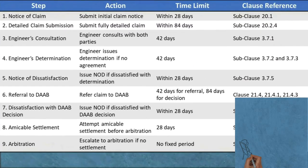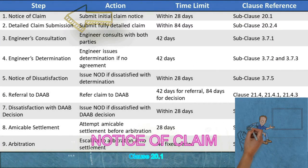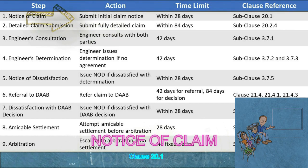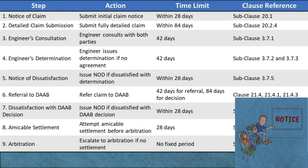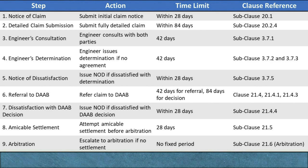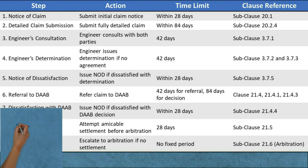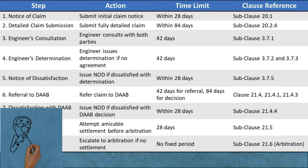Step 1: Notice of Claim (Subclause 20.1). Action: The claiming party, typically the contractor, must issue a notice of claim to the engineer. This notice should clearly identify the event or circumstance giving rise to the claim, detailing the facts that justify why the contractor believes an entitlement exists.